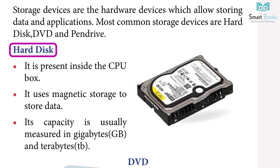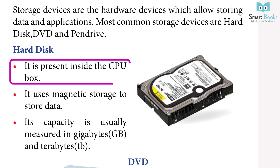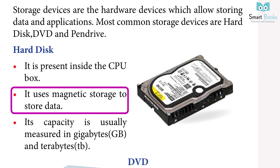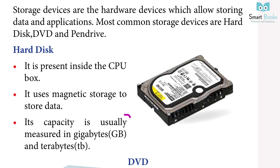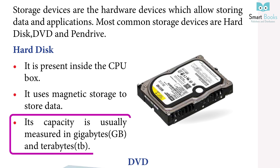Hard disk: it is present inside the CPU box. It uses magnetic storage to store data. Its capacity is usually measured in gigabytes (GB) and terabytes (TB).